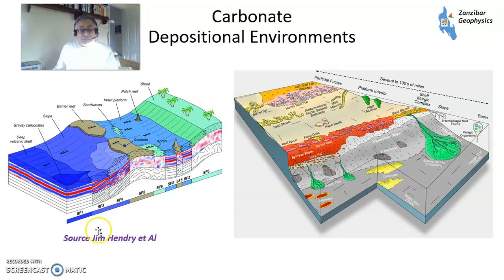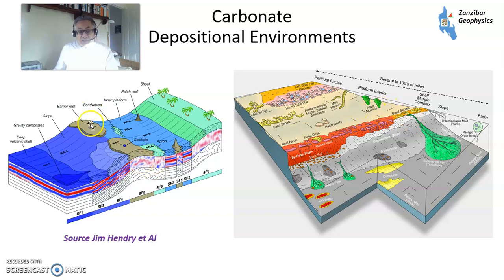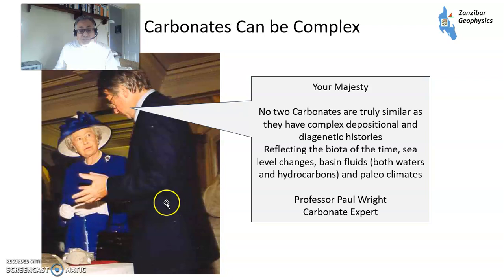A little about depositional environments for carbonates — this is a paper by my former colleague Jim Henry. You've got reefs, aprons, beaches, etc. The best reservoirs tend to be reefs and carbonate platforms, which come in all sorts of different shapes and sizes with complicated histories and complicated diagenesis. This is Professor Paul Wright, a former colleague of mine, explaining carbonate sedimentology to the Queen — he's a really good expert, so please have a chat with him if you need to know more.